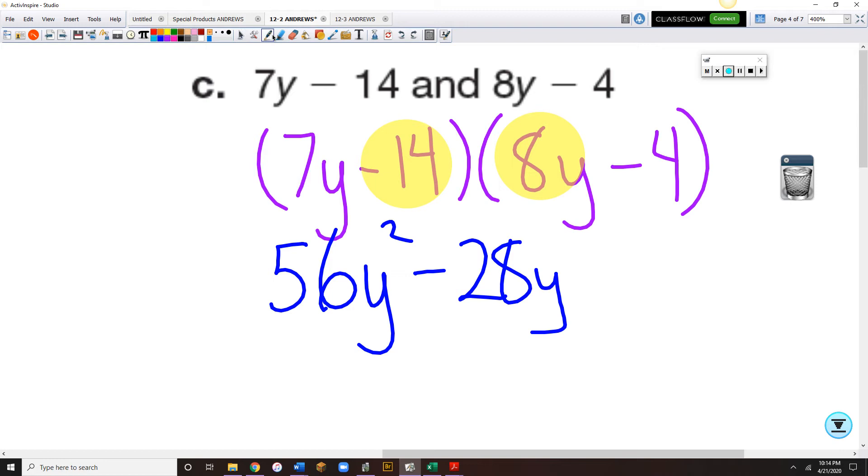So 7y times a minus 4 is a minus 28y. Minus 14 times 8y is minus 112y. And the minus 14 times the minus 4 is plus, remember a minus times a minus makes a plus, okay, 14 times 4 is 56.